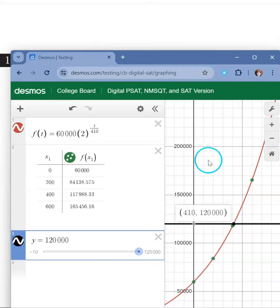410 is the correct answer. In 410 minutes the bacteria will double.